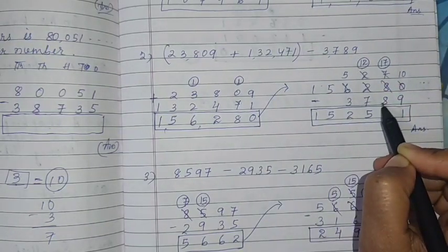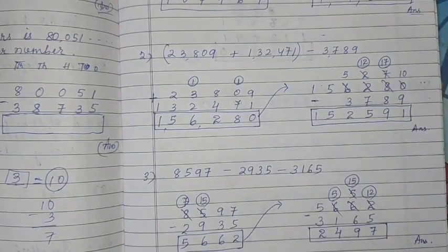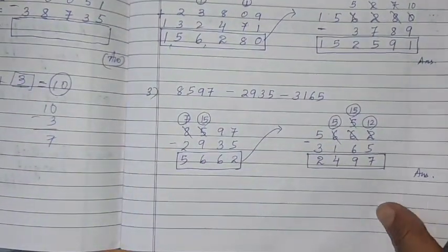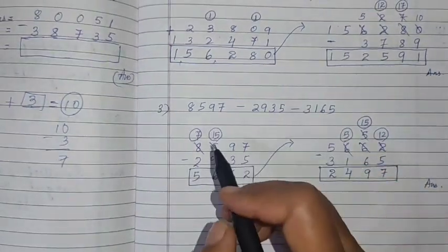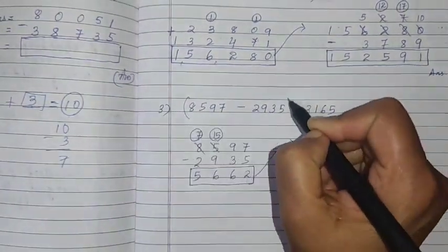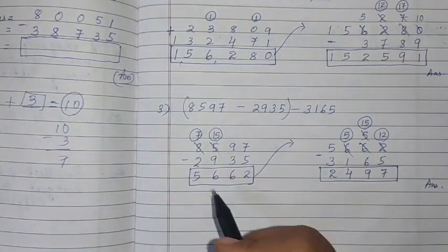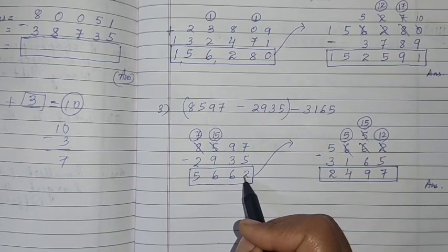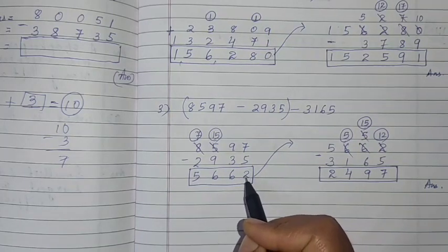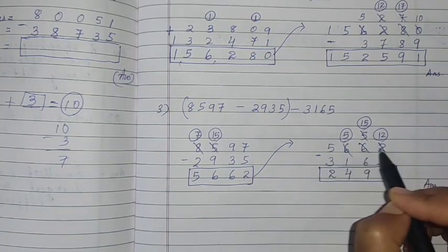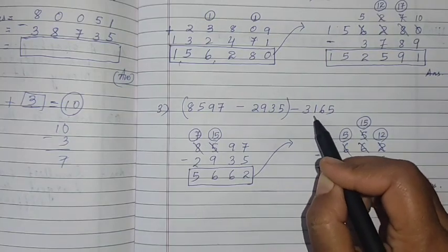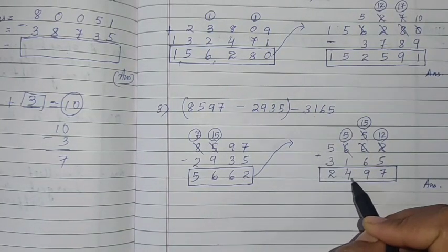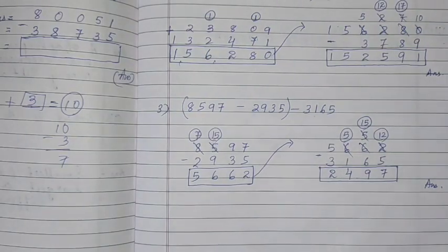Same way, see the next question. All subtractions are there, three together. First two numbers you take, arrange numbers and do subtraction. You'll get 5,662. Now 5,662 you take here, write separately minus this third number 3,165. Answer is 2,497.